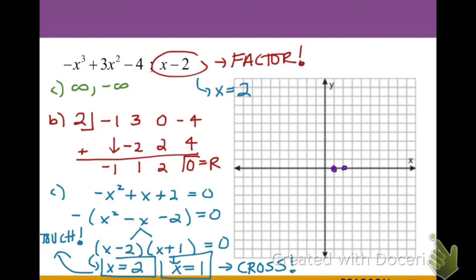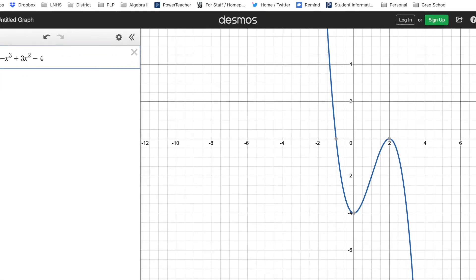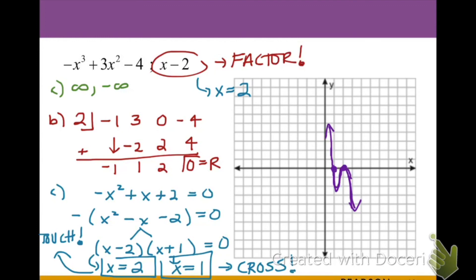So x equals 2 appears twice — giving it even multiplicity — meaning it touches at 2 on the x-axis, while x equals negative 1 appears once so it crosses. Plotting our zeros of 1 and 2, with x minus 1 crossing and x equals 2 touching, and adding our rise-left, fall-right end behavior, we fill in our degree-3 curve with two changes in direction. This concludes how we use synthetic and polynomial long division to help us graph polynomials. Pause and review any examples as needed.